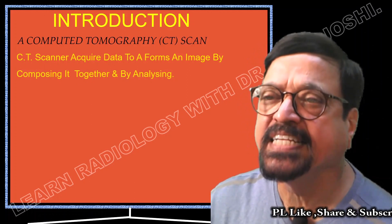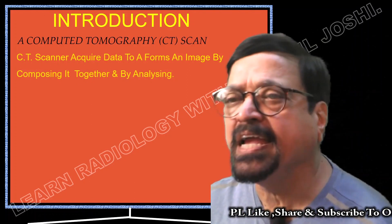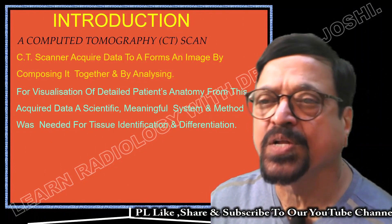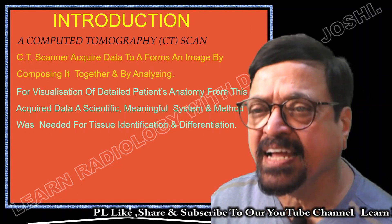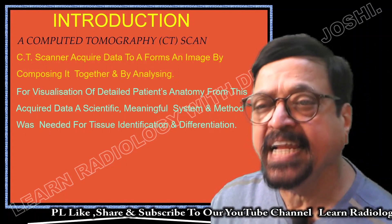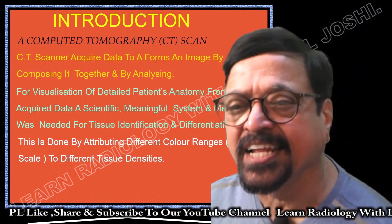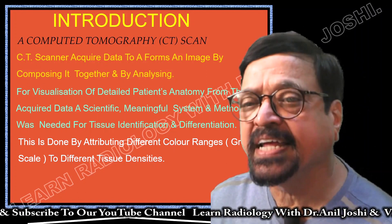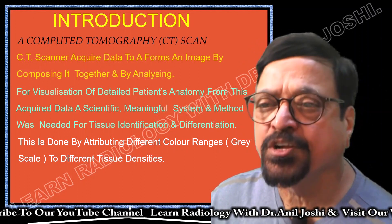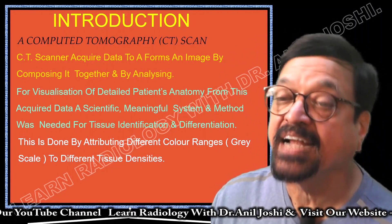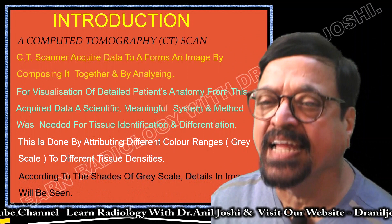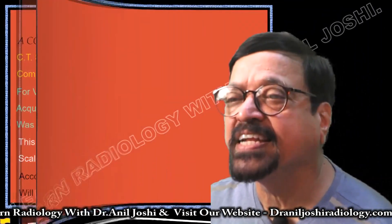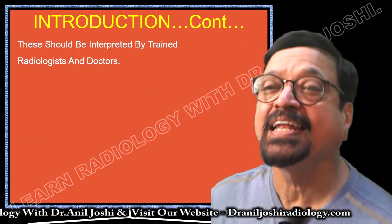In computed tomography (CT), the patient data is acquired and composed together; the computer analyzes it and we get the image for visualization of detailed patient anatomy. A scientifically meaningful system and method was needed for tissue identification and differentiation. This is done by attributing different color ranges — not colors other than black and white, but shades of gray. By attributing different shades and ranges to different tissues and densities, we achieve the required anatomical detail. The image will have different ratios and accordingly different detail, allowing us to identify anatomical structures.